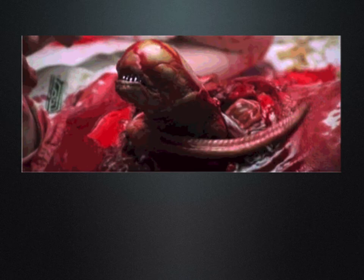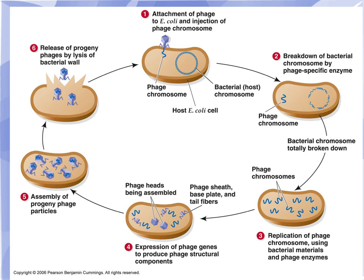There's a good example of a lytic cycle in the Alien movie. Here is a far less traumatic picture. You can see a bacteriophage landing on a bacteria, injects, makes more of itself, and then explodes out with new ones.